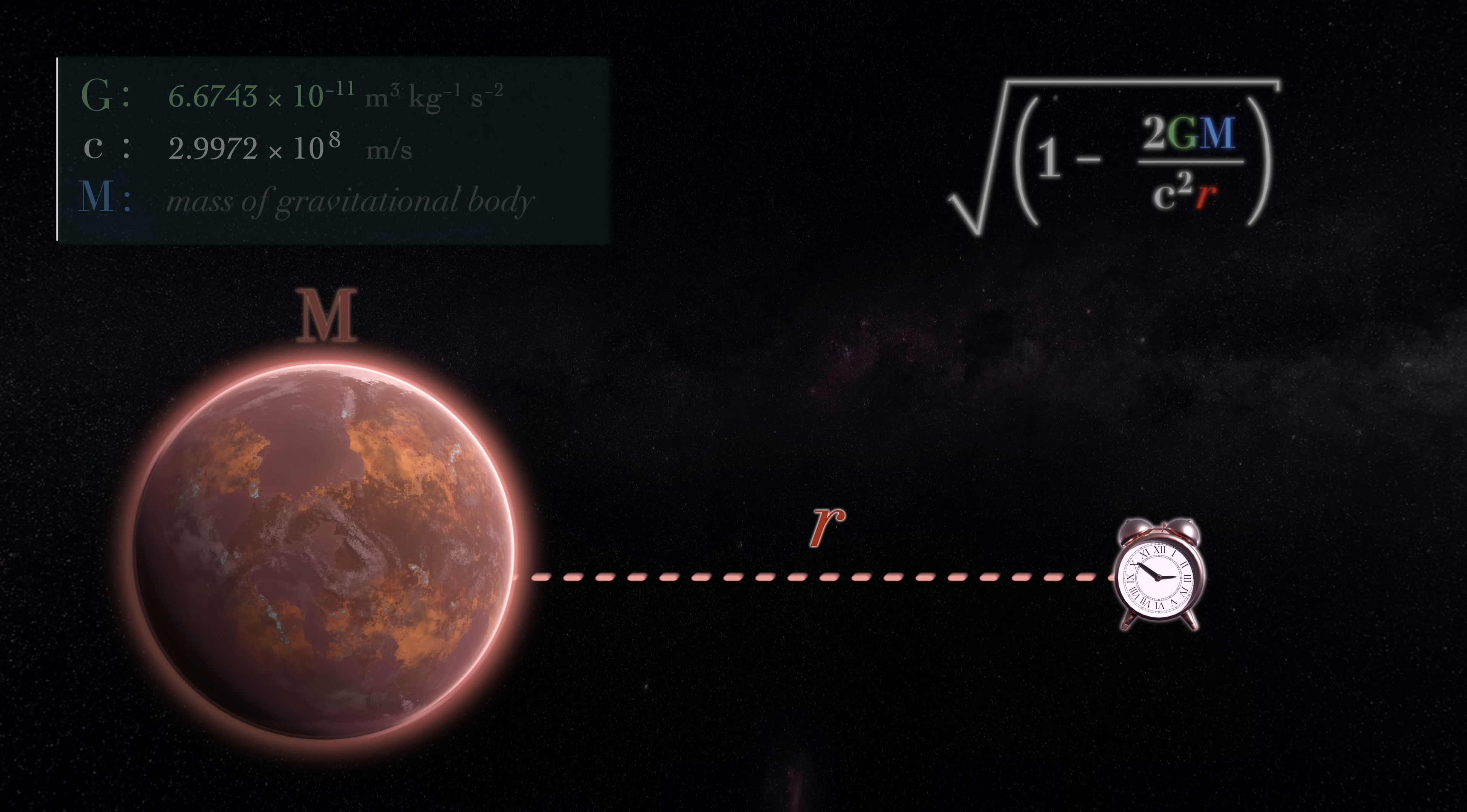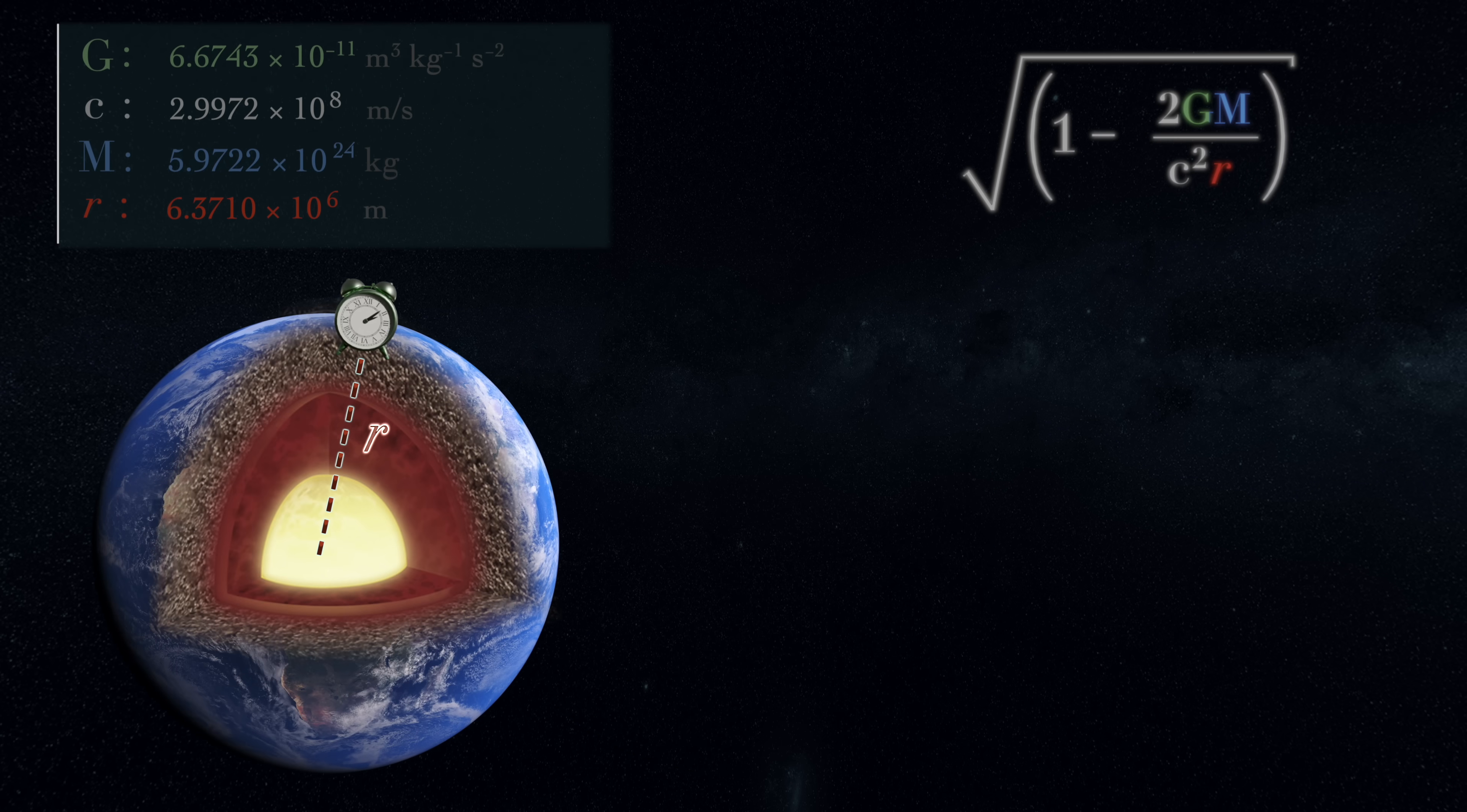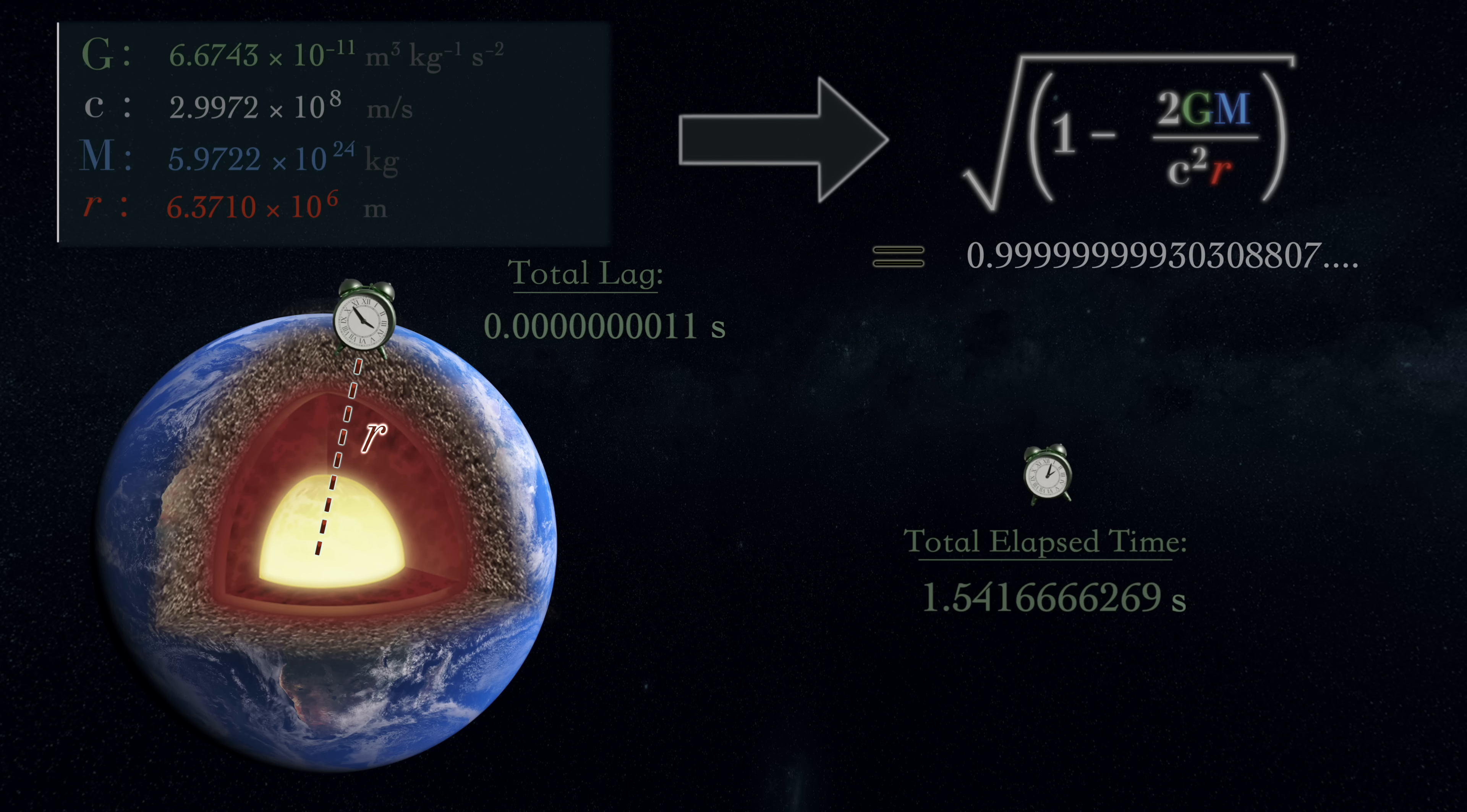As an example, if we consider a clock on the surface of the Earth, then, after plugging in all the respective values, this expression tells us that our clock runs 0.7 nanoseconds slower than it would if it were out in deep space. Obviously, the effect of gravitational time dilation is very slight in most cases.